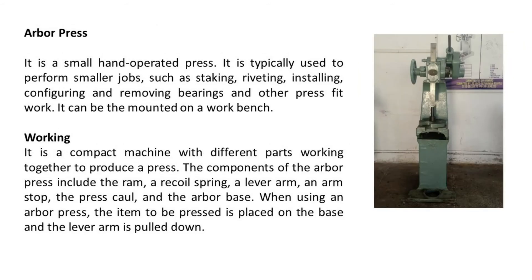Arbor press. It is a small hand-operated press typically used to perform smaller jobs such as staking, riveting, installing, configuring, and removing bearings and other press fit work. It can be either mounted on a work bench. Working: it is a compact machine with different parts working together to produce a press. The components of the arbor press include the ram, a recoil spring, a lever arm, an arm stop, the press column, and the arbor base. When using an arbor press, the item to be pressed is placed on the base and the lever arm is pulled down.